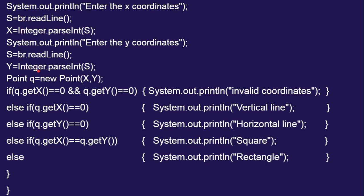We know that a point is a combination of x and y coordinates, so we create a new Point object: Point q = new Point(x, y). In Java, everything is class and object. Point is the class name and q is the object name. This Point class combines the x and y values to create an x-y coordinate on the object q, and we can operate many methods on this object q.